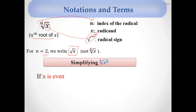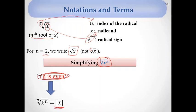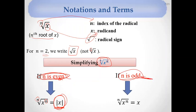When simplifying the nth root of xⁿ: if n is even, we get the absolute value of x. If n is odd, we get x directly. For even index, you must write the absolute value sign; for odd index, no absolute value is needed.